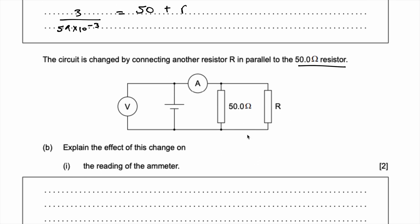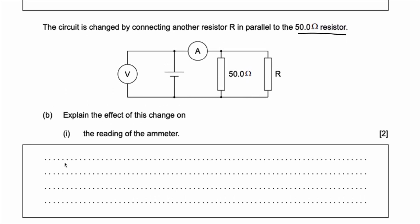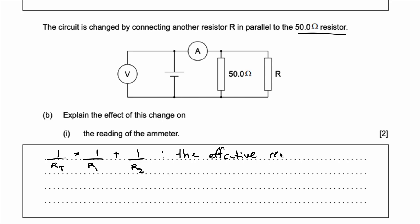When I add another resistor to a circuit in parallel, the effective resistance of the circuit actually decreases. We know the total resistance equals one over R₁ plus one over R₂ — this number always ends up being smaller than a single resistor alone. So the effective resistance of the circuit decreases.